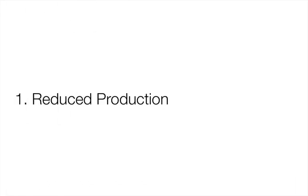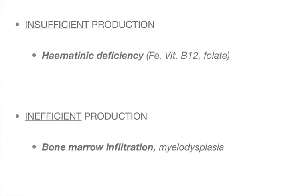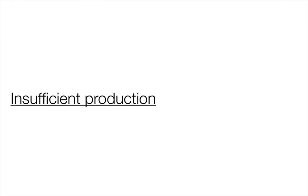Looking at anemia due to reduced production, you can have insufficient production, where there are not enough core elements available — broadly defined as hematinic deficiency. The crucial hematinics are iron, vitamin B12, and folate. In inefficient production, there is a problem with the machinery producing red blood cells, commonly seen in bone marrow infiltration or myelodysplasia.